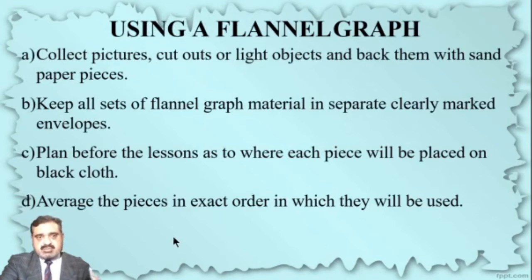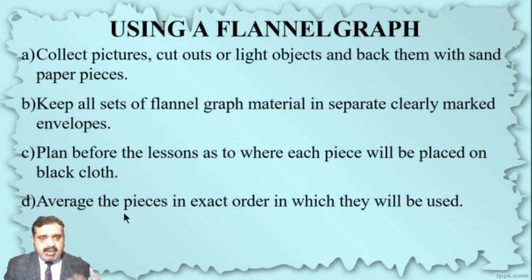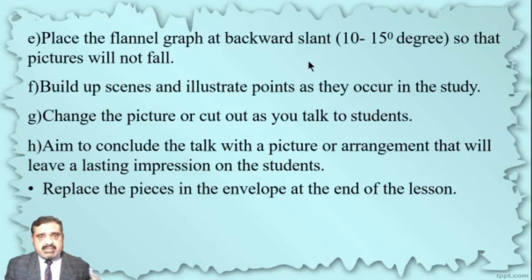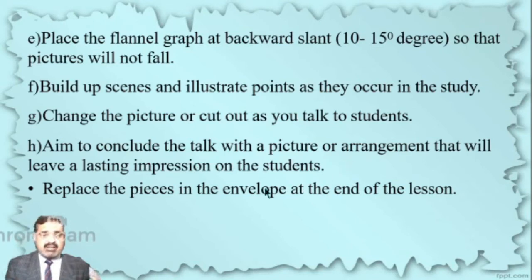When using a flannel cloth, collect pictures, cut-outs, or light objects and back them with a sandpaper piece. Keep all flannel cloth materials in separate clearly marked envelopes, and plan before the lesson as to where each piece will be placed on the cloth. Arrange the pieces in the exact order in which they will be used. Place the flannel board at a backward angle of 10 to 15 degrees so that pictures will not fall. Build up scenes and illustrate points as they occur in the study. Change the picture or cut-out as you talk to students, aiming to conclude the talk with a picture that will leave a lasting impression on the students. Replace the pieces in the envelope at the end of the lesson.